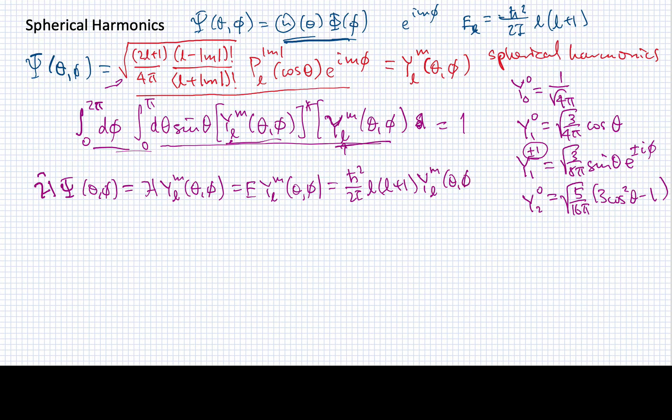Now why have I bothered to write all this out in just sort of pedantic detail? Well, I'll point out that what we have here is the eigenvalue equation, which is the Schrödinger equation. So in other words, the spherical harmonics are the eigenfunctions of the Hamiltonian. I've been calling it something different, but they are the spherical harmonics. But we also have, interestingly, that the Hamiltonian is just 1 over 2I times the angular momentum squared.